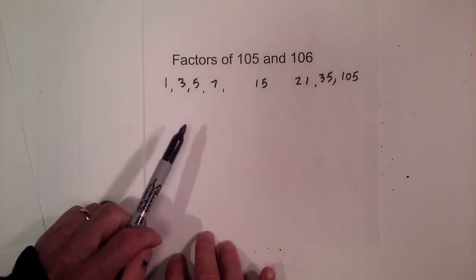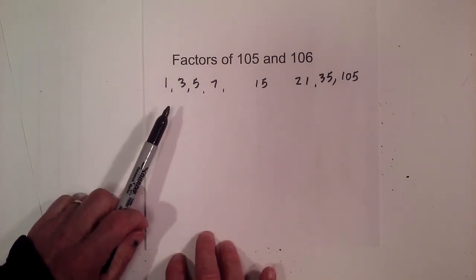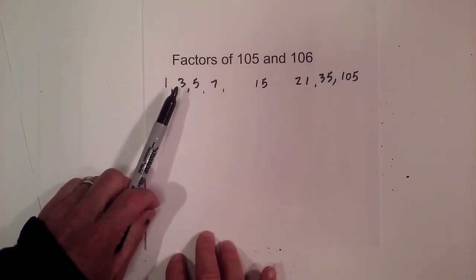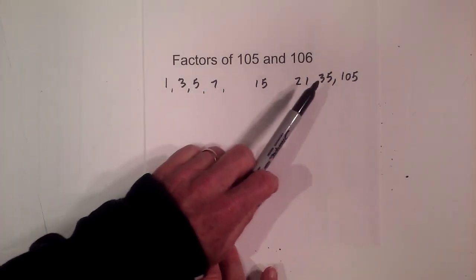So, the prime numbers of 105... excuse me, the factors of 105, not prime factors, the factors of 105 are 1, 3, 5, 7, 15, 21, 35, 105.